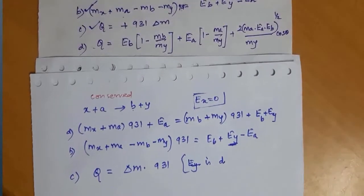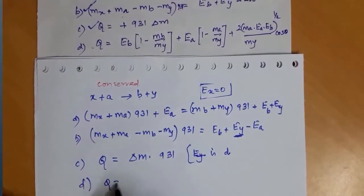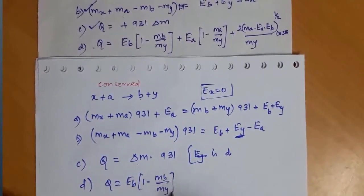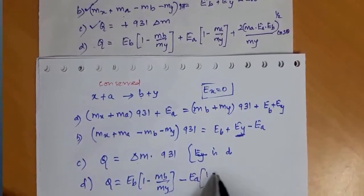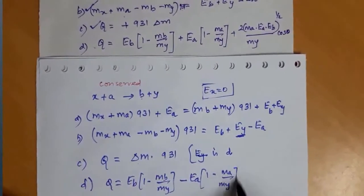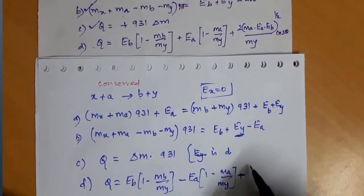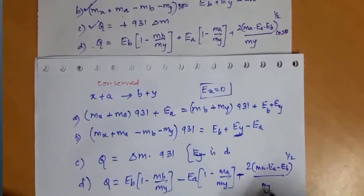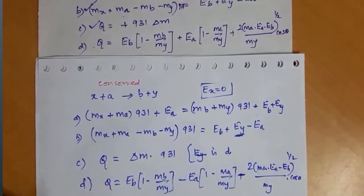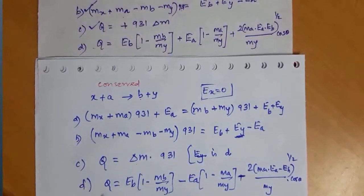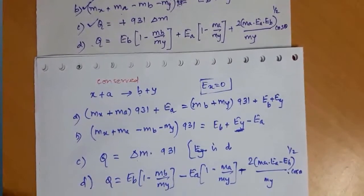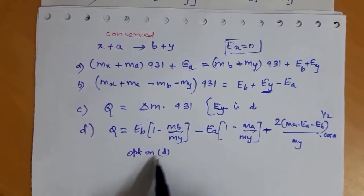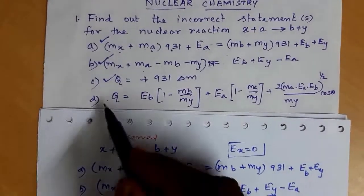In general, the energy is calculated as Q equals EB times (1 minus MB minus MY minus EA times (1 minus MA divided by MY)) into cos theta. Option D is the wrong statement. So the answer is option D — D is the incorrect statement.